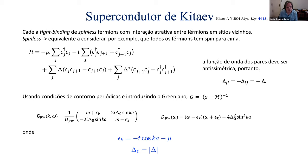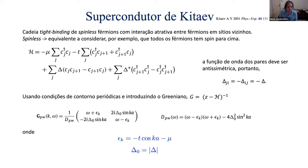O modelo é de uma dimensão, é um modelo tight-binding: você tem uma cadeia de elétrons, um potencial químico, um termo de hopping entre elétrons em sítios vizinhos, e um termo do tipo BCS — em que você já fez o desacoplamento da interação de muitos corpos e já introduziu um parâmetro delta supercondutor. O interessante é que os elétrons não têm spin, é o que chamamos de um modelo de férmions sem spin, equivalente a imaginar todos os spins alinhados na mesma direção.